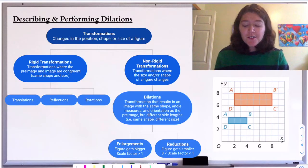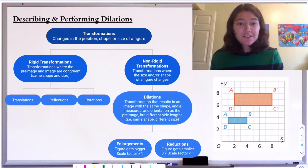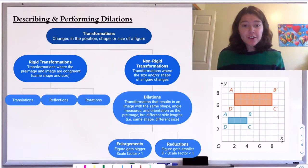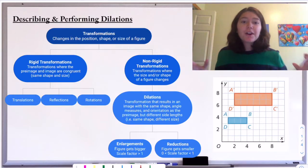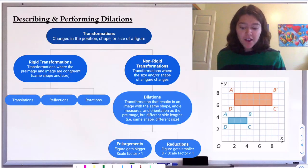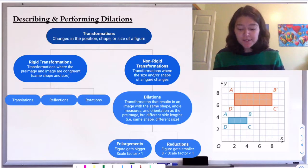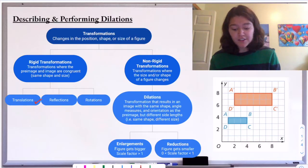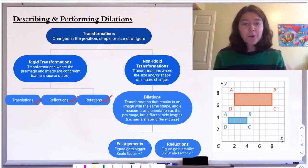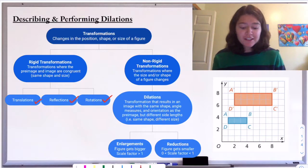Welcome to today's video on describing and performing dilations. As you can see in the flowchart, we are in our transformations unit. We're thinking about transformations and we've already learned all about rigid transformations, which are transformations where the pre-image and the image are congruent — the same shape and size. Examples of rigid transformations are translations, reflections, and rotations, which we've all mastered. So now we're talking about non-rigid transformations.